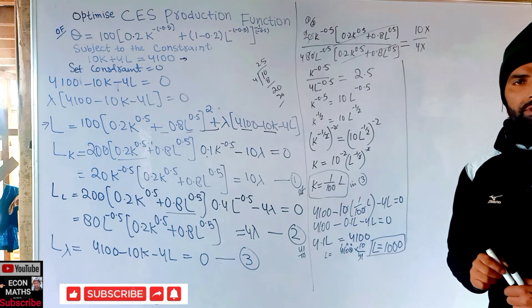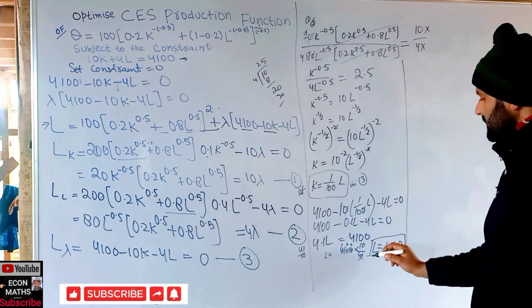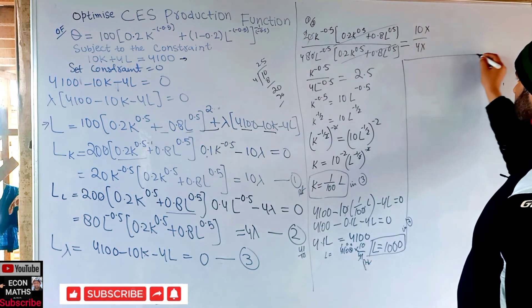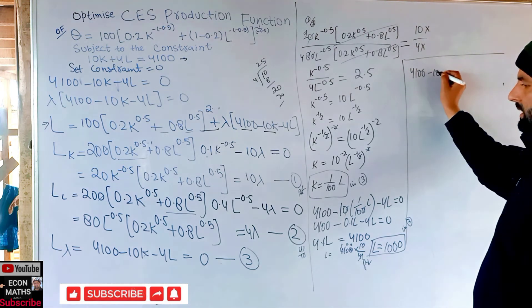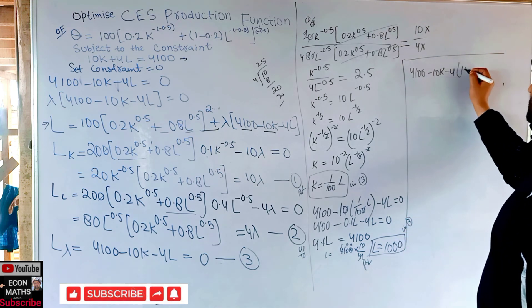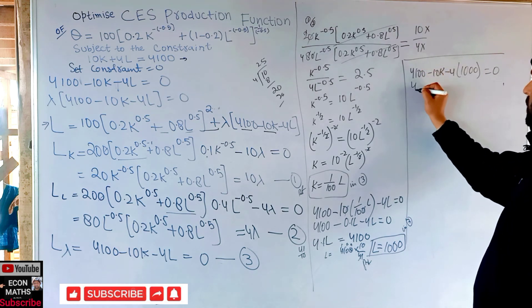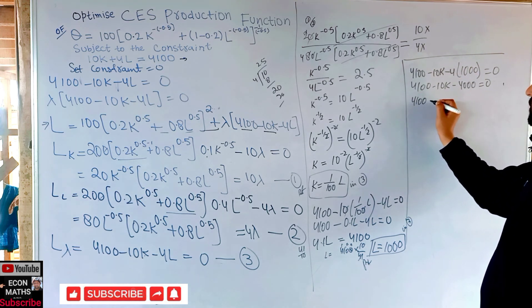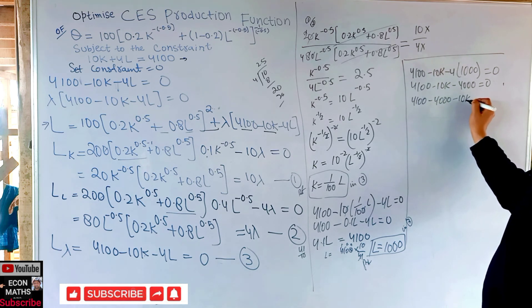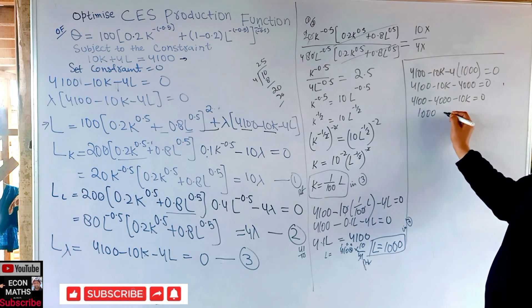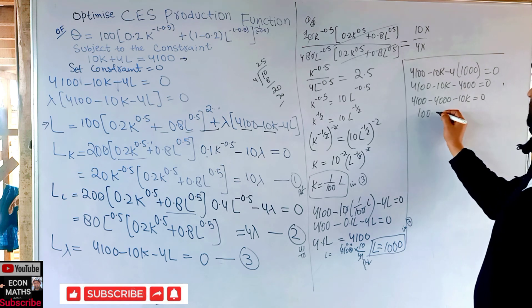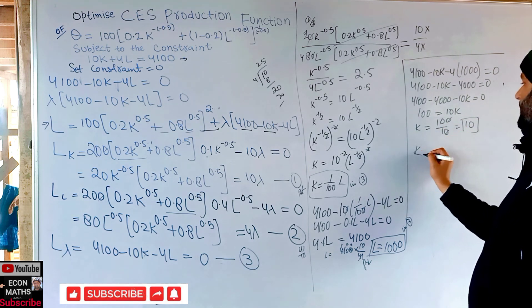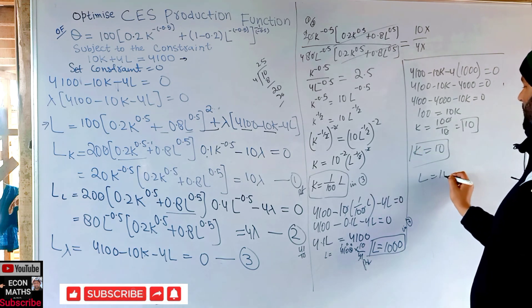The optimal value of L is 1000. Substituting L = 1000 back into Equation 3: 4100 − 10K − 4(1000) = 0, so 4100 − 10K − 4000 = 0, giving 100 = 10K, and therefore K = 10. The optimal values of capital and labor are K = 10 and L = 1000 respectively.